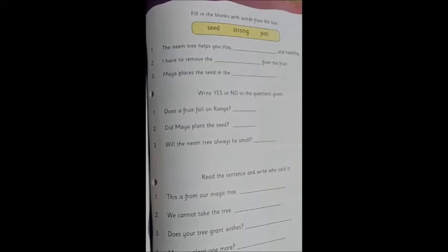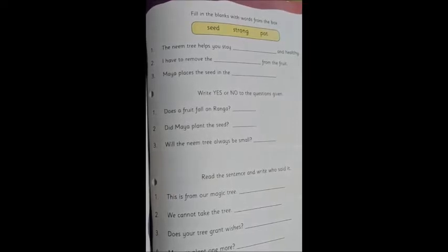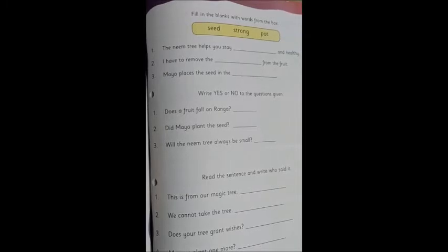Small particles from which other plants can grow. Strong is to be strong and healthy. And pot is a thing in which we plant a seed. So now let's see how these words can be used in a sentence.